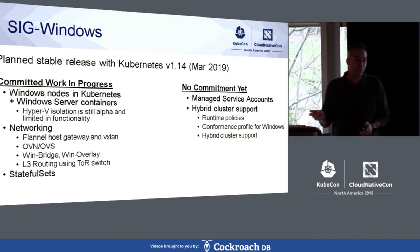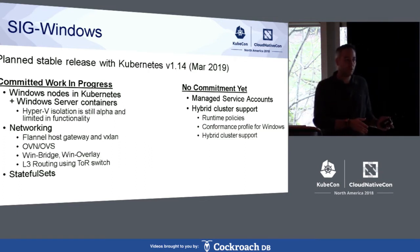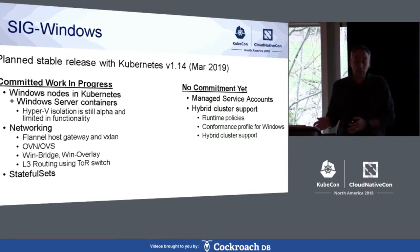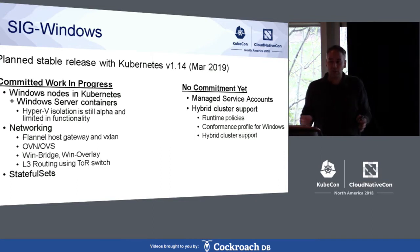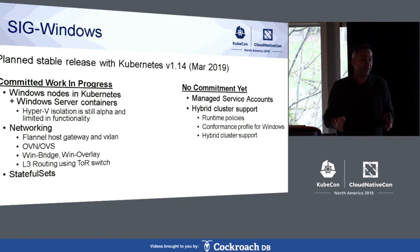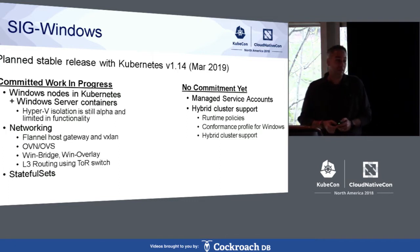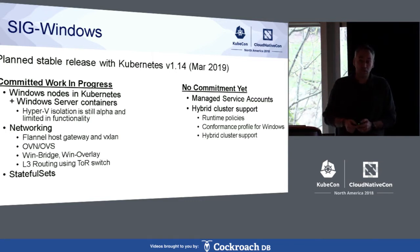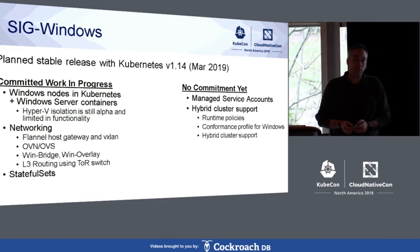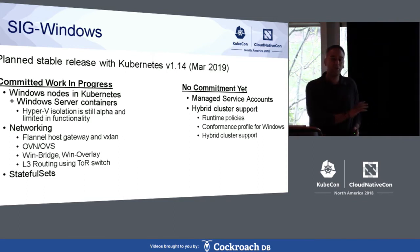Our first and foremost commitment for GA is that you'll be able to put Windows Server nodes into Kubernetes and schedule Windows Server containers — scalable and reliable. Hyper-V isolated containers are still in alpha, with a limitation of one container per pod. On the networking side, Flannel HostGateway and VXLAN will be available by the target timeframe, as well as OVN, OVS, WinBridge, and WinOverlay — the new generation of WinCNI. You'll also be able to do Layer 3 networking using top-of-rack switches.